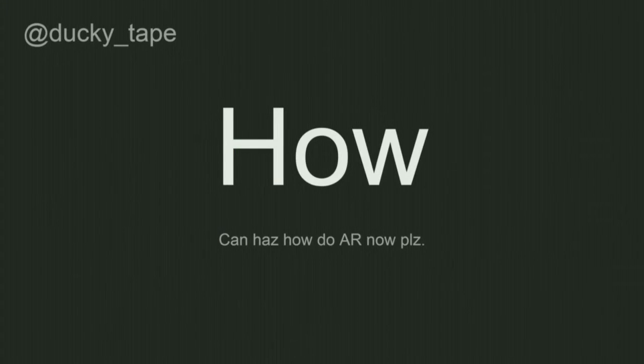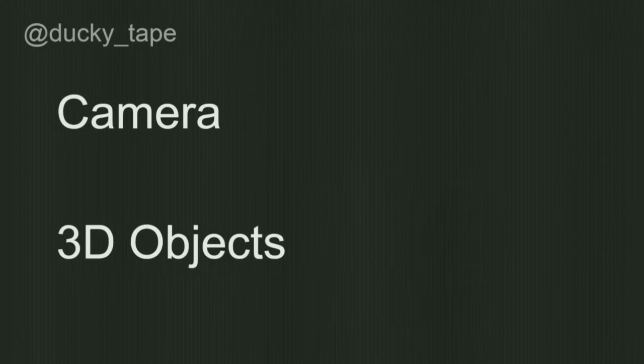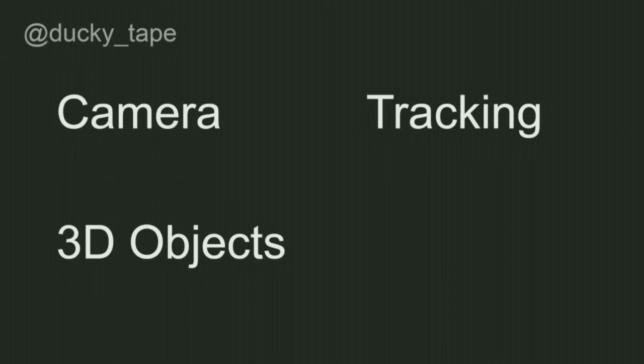There's so much out there — I wasn't sure where to begin writing this talk. But that's not the most important part. The important part is: how do we actually do this? How do we look at a thing and see a different thing on the screen? Going back to the definition, we can break it down: you need a camera for a live feed, you need the real-world environment, you need to be able to display the camera, you need something to put on it, you need tracking to find where to put that object, and you need a view that ties it all together.